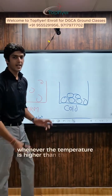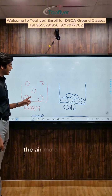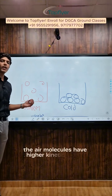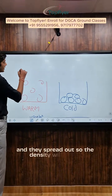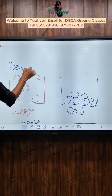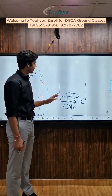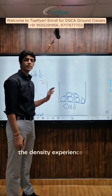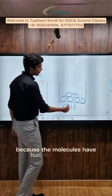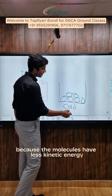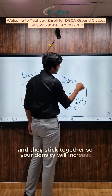Whenever the temperature is higher than the standard temperature of 15 degrees Celsius, the air molecules have higher kinetic energy and they spread out, so the density will reduce. Similarly, when the temperature is colder than ISA, the density experienced by the aircraft will be higher because the molecules have less kinetic energy and they stick together, so your density will increase.